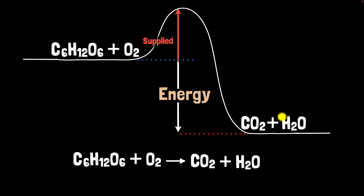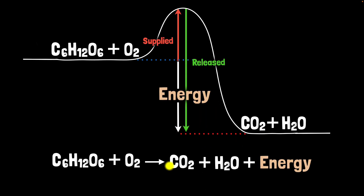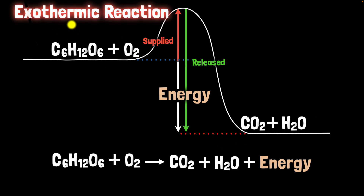But when the new bonds are formed, they will release this much amount of energy. So a lot more energy is being released compared to how much we are supplying. Therefore, overall, the energy is released in this reaction. And that's why such chemical reactions where energy is released are called exothermic reactions. The word 'exo' means outside — the energy is going out of this reaction.